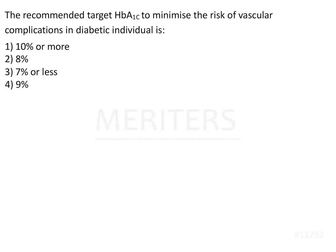The recommended target HbA1c to minimize the risk of vascular complications in diabetic individuals is? The options are 10% or more, 8%, 7% or less, and 9%. First of all, we have to understand how to make the diagnosis of diabetes.